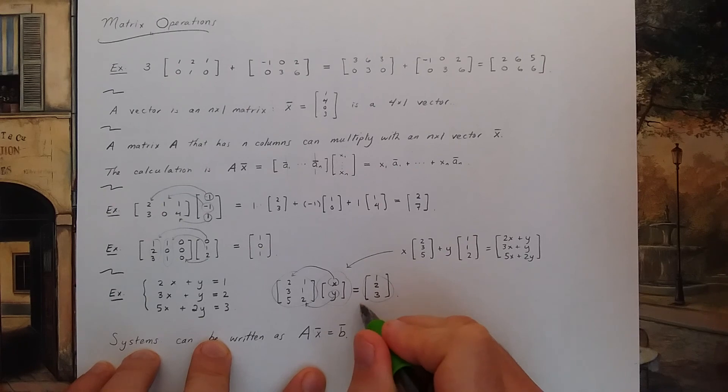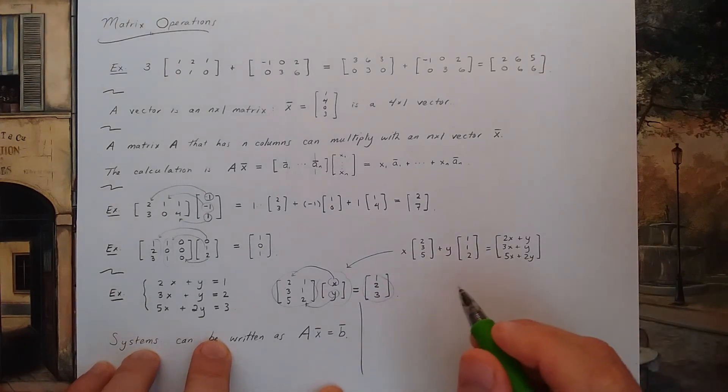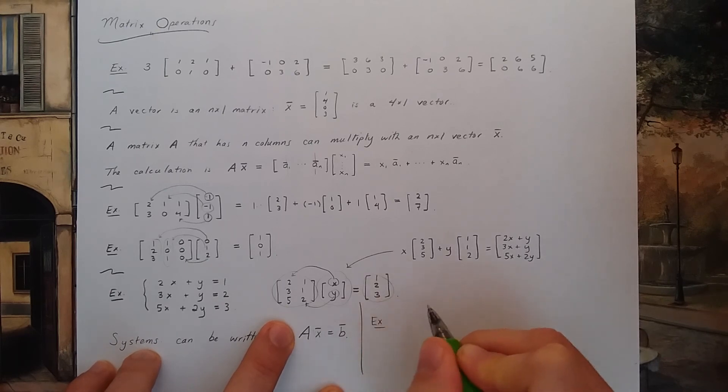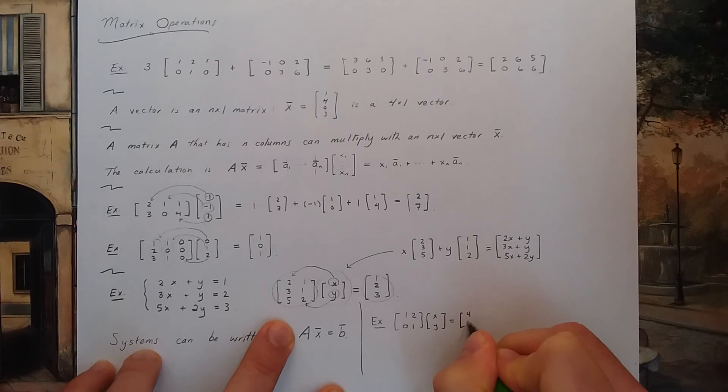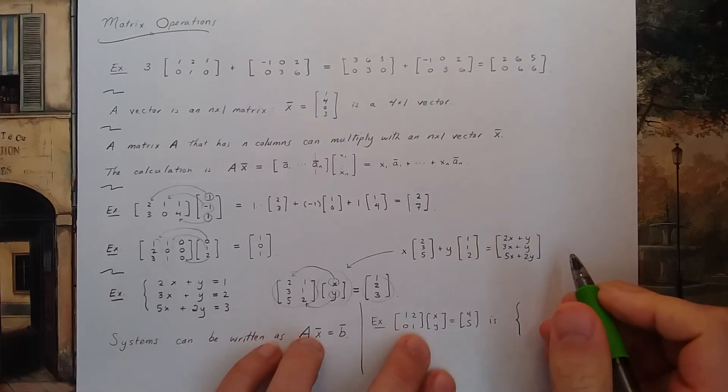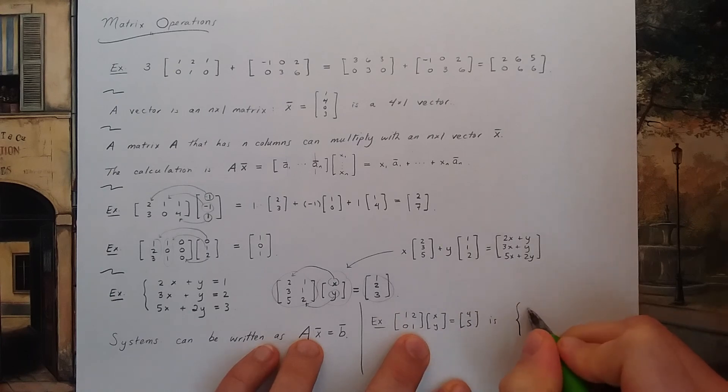Maybe I should just finish here with this space on the paper to do one other example. So one other example, just very briefly, the system 1, 2, 0, 1, x, y is equal to 4, 5 is the system represented by x plus 2y is equal to 4, and 0x plus y is equal to 5.